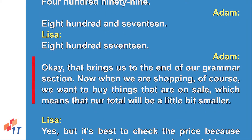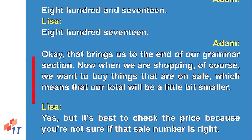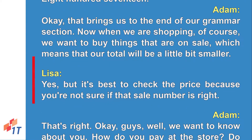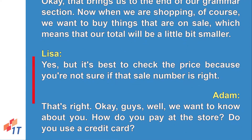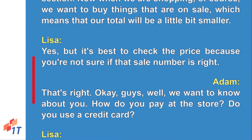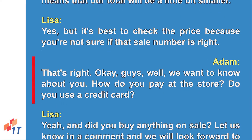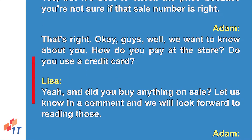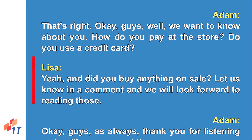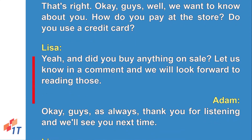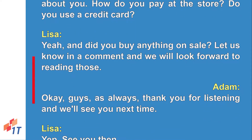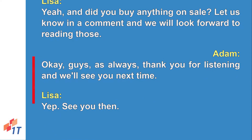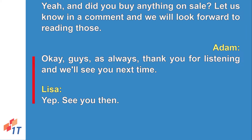That brings us to the end of our grammar section. When we are shopping, we want to buy things that are on sale, which means our total will be a little bit smaller — but it's best to check the price first because you're not sure if that sale number is right. We want to know about you — how do you pay at the store? Do you use a credit card? Did you buy anything on sale? Let us know in a comment. As always, thank you for listening and we'll see you next time!